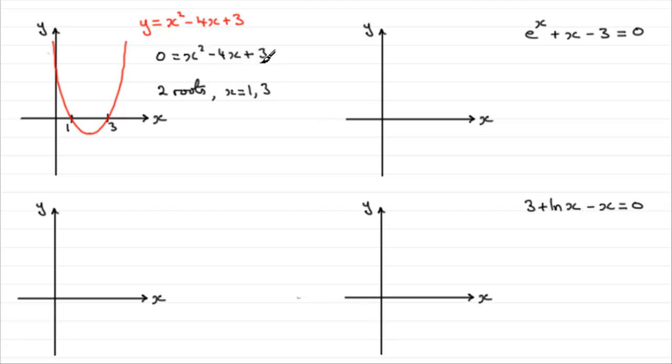But it's not the only way to solve this equation graphically. What we can do is split it up. Suppose we add 4x to both sides and subtract 3. We would get x squared equals 4x minus 3.